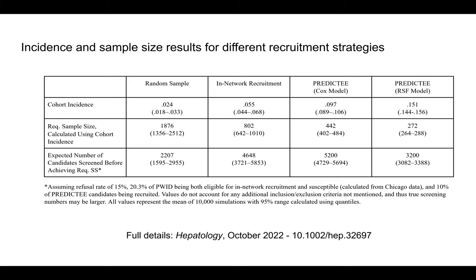At the same time, PREDIC-D may actually reduce the screening requirement needed to achieve the required sample size compared to conventional recruitment, based on an estimated refusal rate of 15% and 10% of each PREDIC-D batch being recruited. For additional details on our results and methodology, please see our full paper.